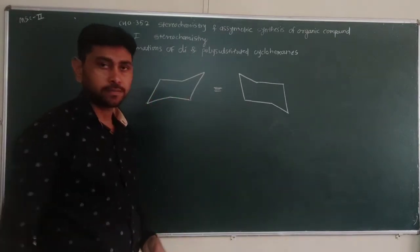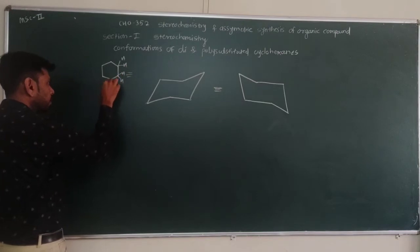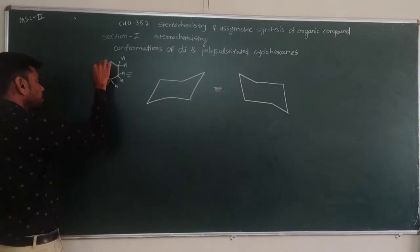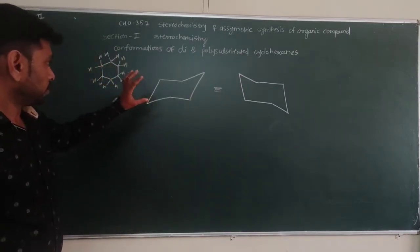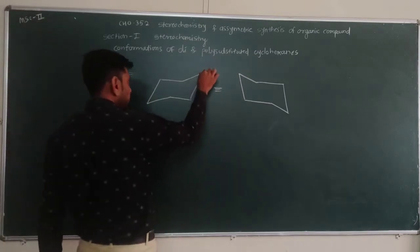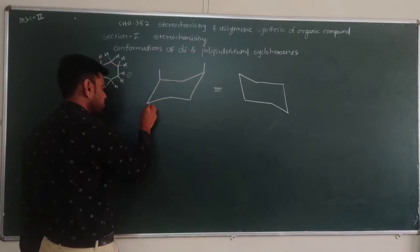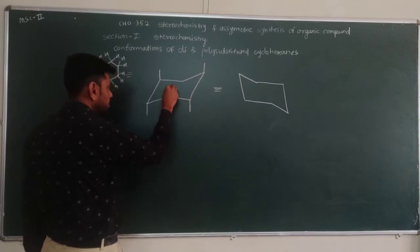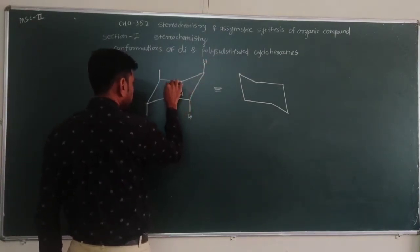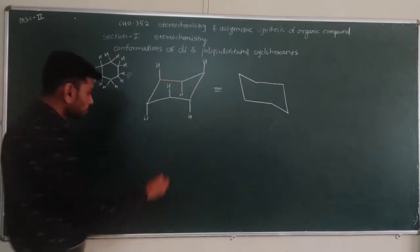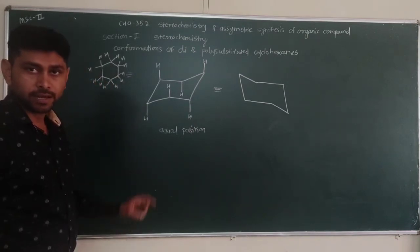Now these chair conformations contain six carbons. Every carbon contains two hydrogens, or in substituted compounds, instead of hydrogen there is a substituent. There are two positions at each carbon — you can see one hydrogen or maybe another group. These positions are axial positions, also called axial hydrogens.